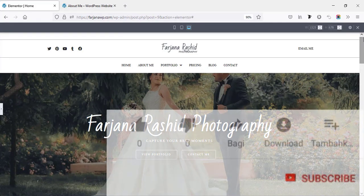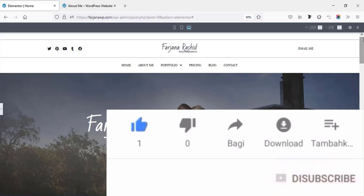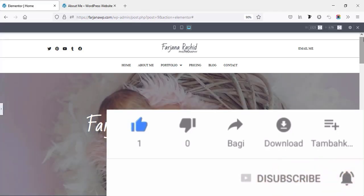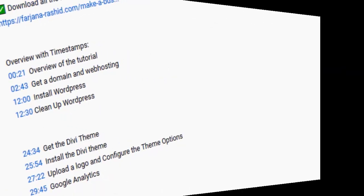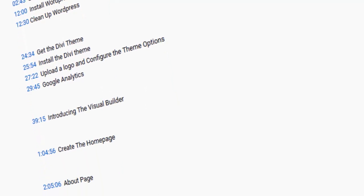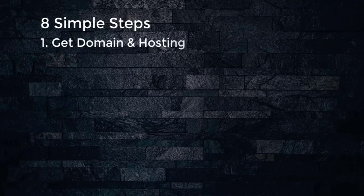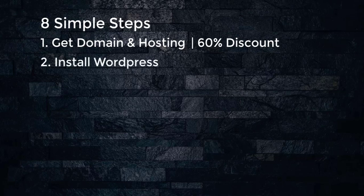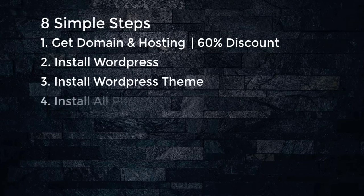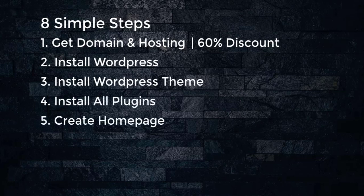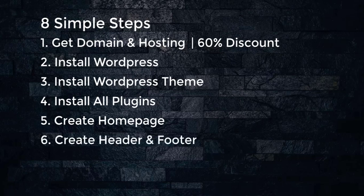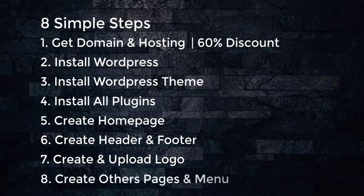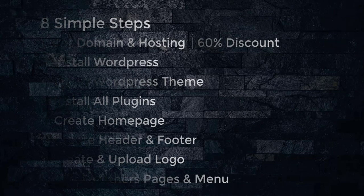If you think this tutorial adds value, please give this video a big thumbs up — otherwise you may not find this kind of tutorial next time. If you're new here, don't forget to subscribe. In the description you'll find a timestamp so you can jump to any specific part. I have divided this tutorial into eight simple steps: getting your domain and hosting, installing WordPress, installing a WordPress theme, installing all necessary plugins, creating the home page from scratch, creating the header and footer area, creating your own logo and uploading it, and finally creating all other pages and the menu.